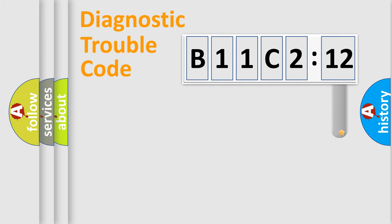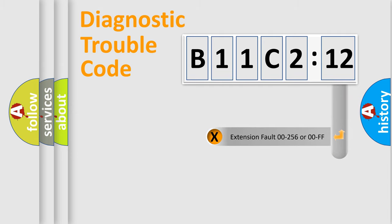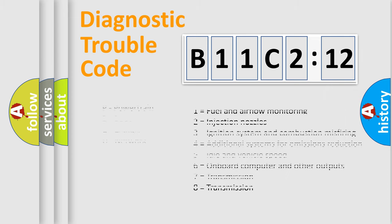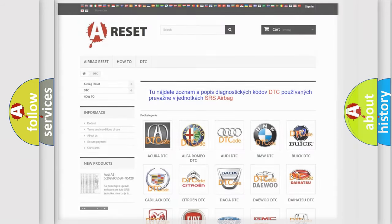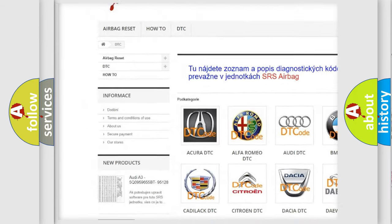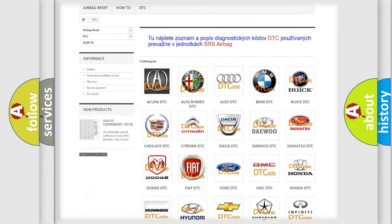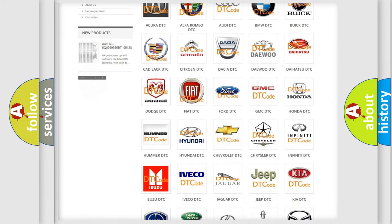Our website airbagreset.sk produces useful videos for you. You do not have to go through the OBD2 protocol anymore to know how to troubleshoot any car breakdown. You will find all the diagnostic codes that can be diagnosed in Chrysler vehicles, along with many other useful things. The following demonstration will help you look into the world of software for car control units.